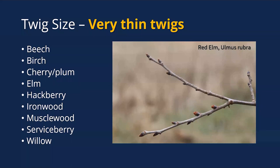Our thin-twig species — those with very thin, wispy twigs — include beeches, birch, cherries, plums, elms, hackberries, ironwood, musclewood, serviceberry, and willow. Those groups generally have our thinnest twigs.